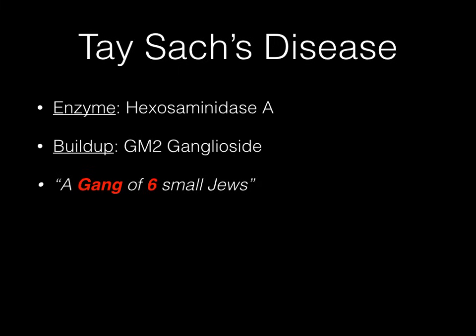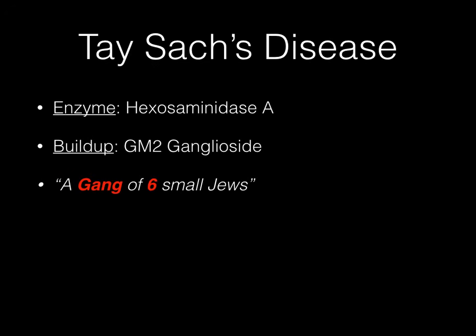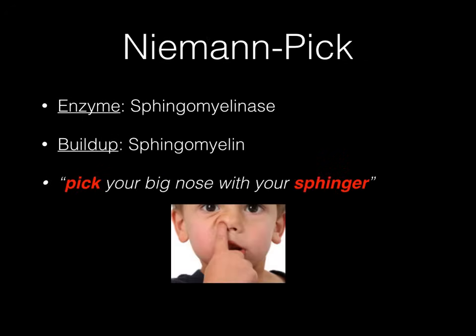The word small in the Tay-Sachs mnemonic clues you into the fact that there is no hepatosplenomegaly — which differentiates it from Niemann-Pick disease. Niemann-Pick also features a cherry red spot on the macula, so you must differentiate them by the presence or absence of hepatosplenomegaly. The mnemonic for Niemann-Pick is: 'Pick your big nose with your sphinger.' Sphingomyelinase is deficient and sphingomyelin accumulates. Big nose means hepatosplenomegaly. Both diseases occur in Ashkenazi Jews and both have cherry red spots on the macula.